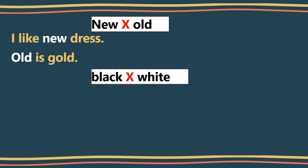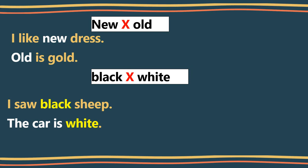Black and white. See, I saw black sheep. And white, the car is white. So in this way we can make simple sentences. You just complete your sentences also.